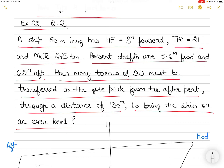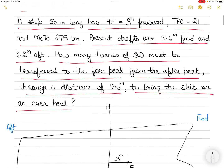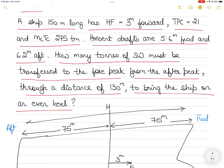If you have never seen these kind of questions before and this is the first video you are watching, the links to previous questions from this exercise are in the description below. HF 3 meters forward means that H is the midship and F is the center of flotation, which is 3 meters forward from midship. The vessel's length is 150 meters, so each half is 75 meters — 75 meters from midship to forward perpendicular and 75 meters from aft perpendicular to midship. Total is 150 meters length between perpendiculars.